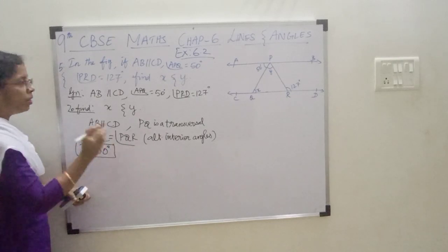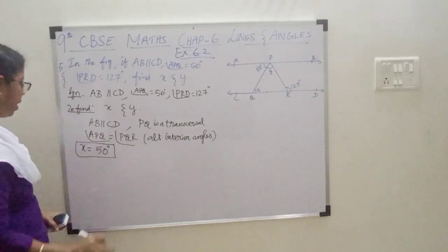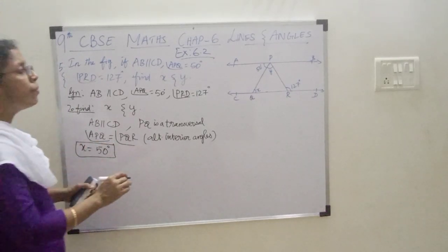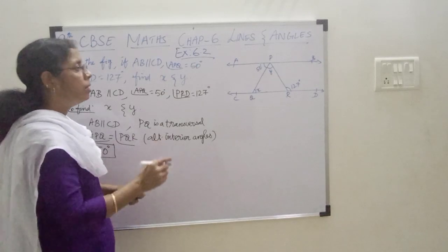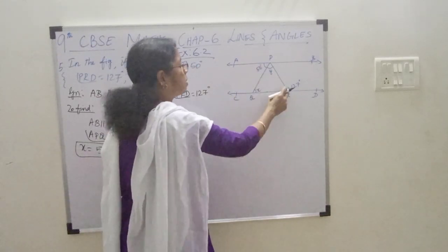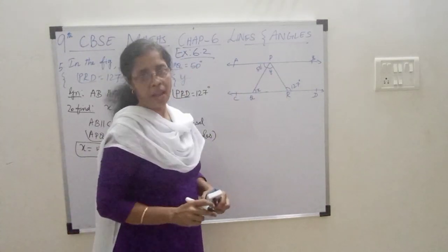So this implies X is equal to 50 degrees. So, we found X. Next, we are supposed to find out Y. Before finding Y, just see — PQR is a triangle.